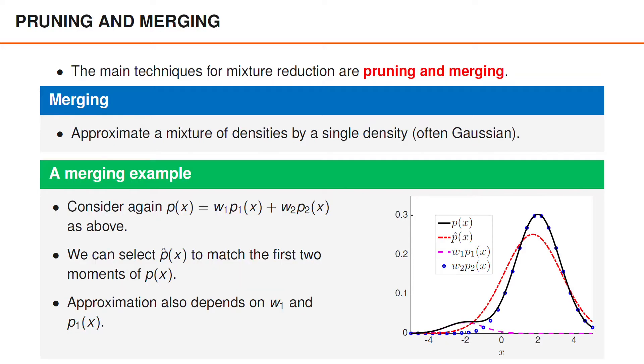For instance, if we return to the example where p of x is a Gaussian mixture with two components, we could then use merging to reduce this mixture to a single Gaussian density. However, instead of removing one component, we would select p hat of x to be a Gaussian density with the same mean and variance as p of x.